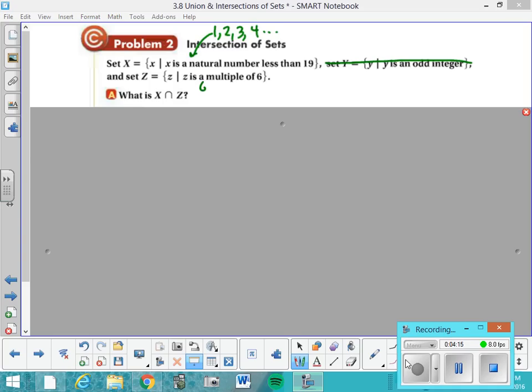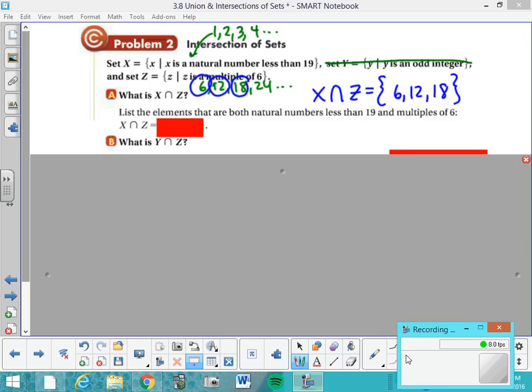And set Z are the multiples of 6. So 6 times 1, 6 times 2, 6 times 3, 6 times 4, et cetera. If I'm looking for the intersection of those sets, which ones are in both here? And you can see that 18 is going to be in set X, 12 will be in set X, and 6 will be in set X. So you can say that X intersect Z is equal to the set of 6, 12, 18.